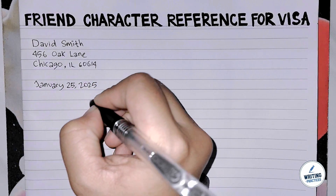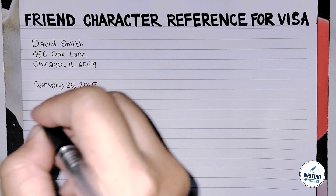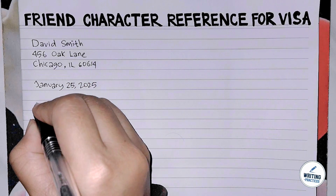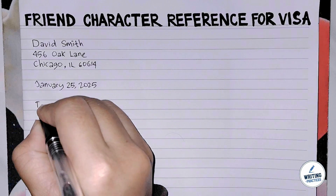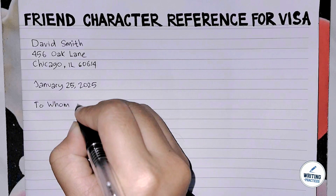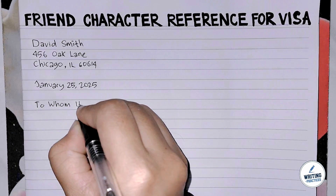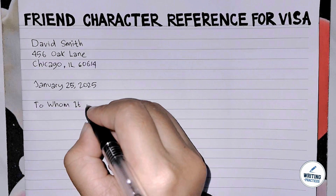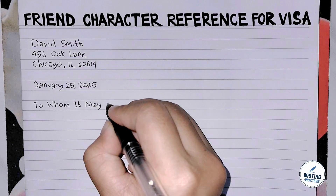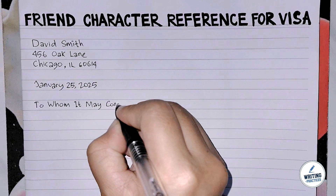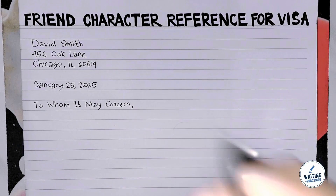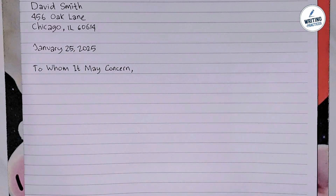After that, you need to write the date of the letter, indicating when the letter is being written. You need to write the full date by including the month, day, and year. For the next step, write the recipient information. For a character reference, you may address the letter to 'To Whom It May Concern' if the specific recipient's name is unknown. This also becomes a formal salutation in opening the letter, as the visa authority may vary.